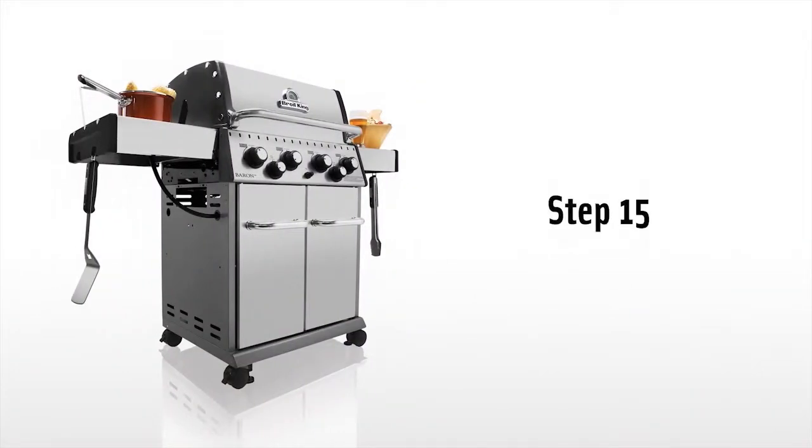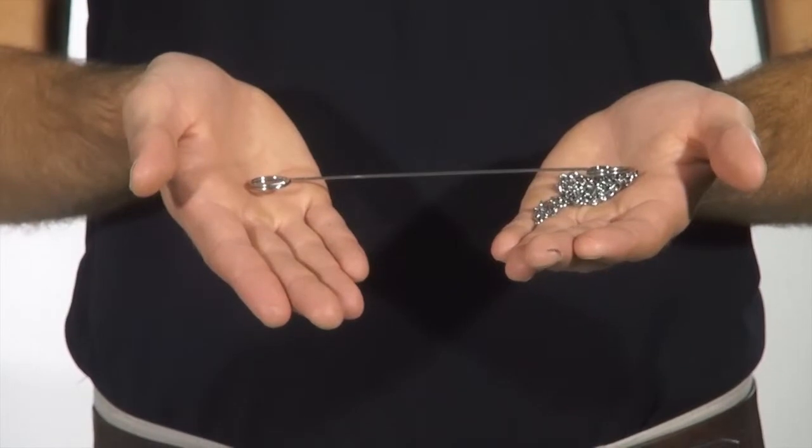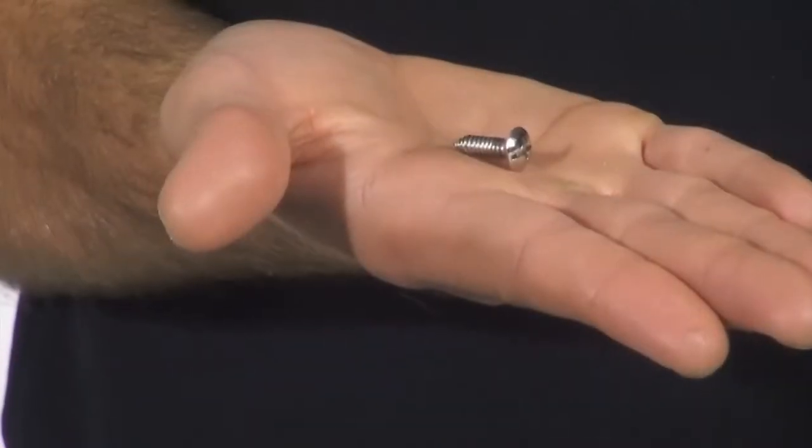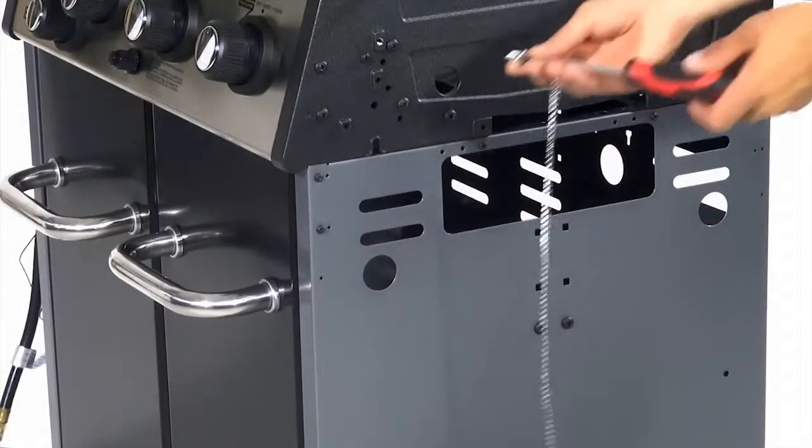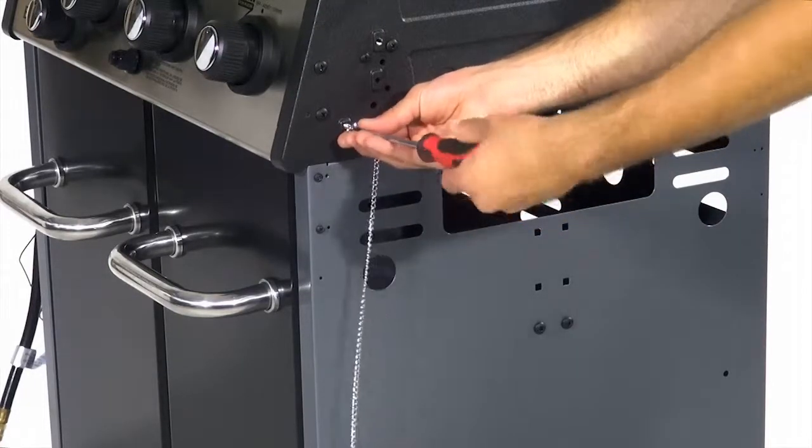Step 15. Attach the match light assembly to the bolt hole on the right side of the control panel end cap. Now tighten using your screwdriver.